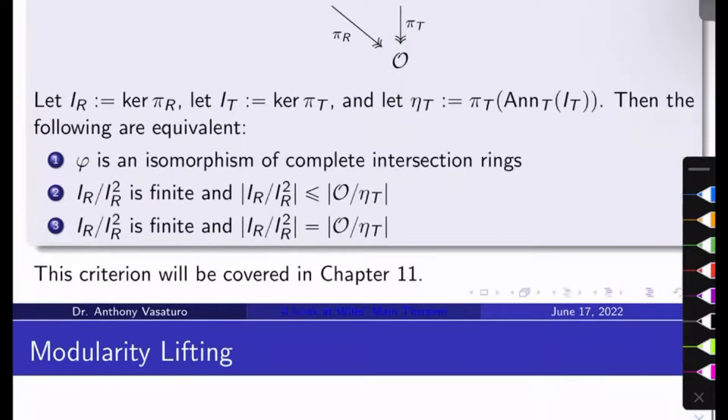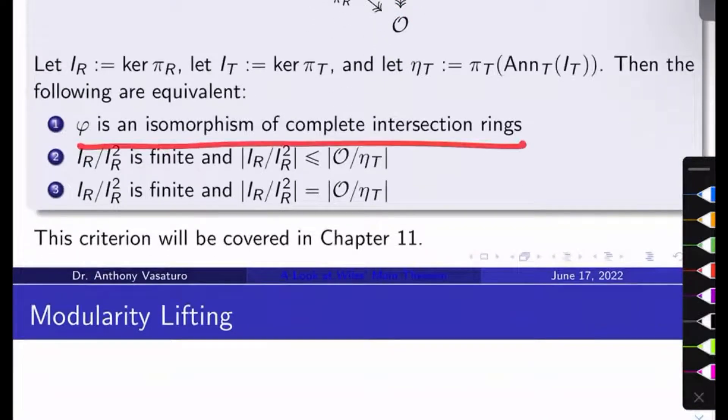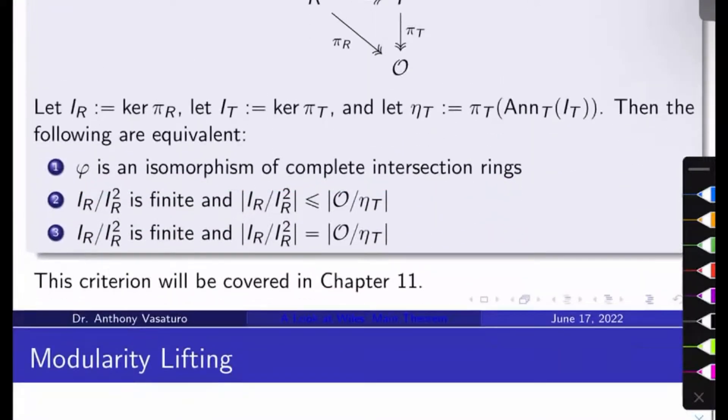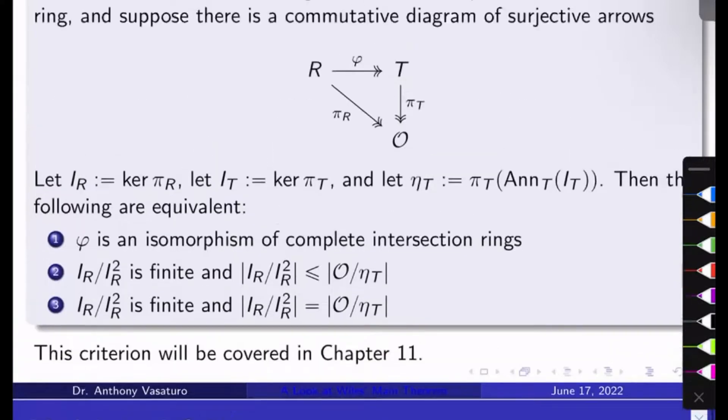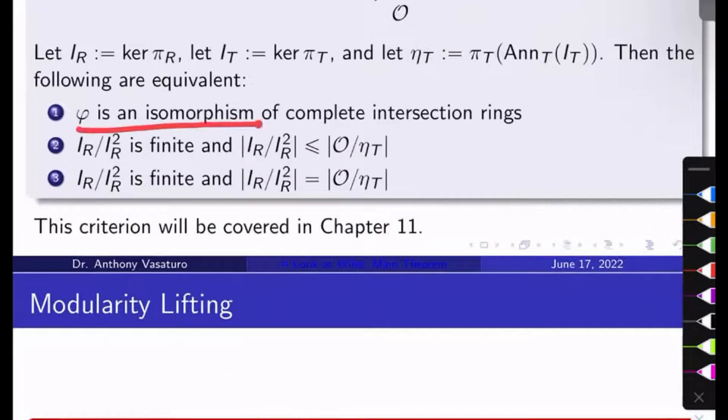Then the following three things are equivalent: phi is an isomorphism of complete intersection rings (which is what we want); IR mod IR squared is finite and its size is less than or equal to the size of O mod eta_T; and IR mod IR squared is finite and its size is equal to the size of O mod eta_T. I will be covering this criterion in chapter 11. But Wiles essentially shows we have a commutative diagram of surjective arrows pretty easily, and then he shows that phi_D from R to T_D is an isomorphism of complete intersection rings by invoking step two here.